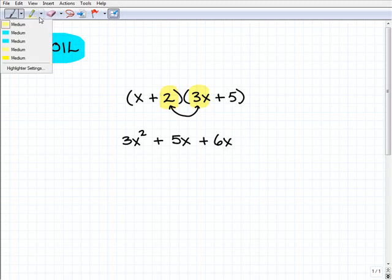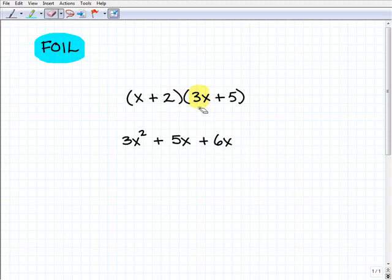And now that leaves us with the last. Let me get rid of this here. And the last is the last of each term of these binomials. That's going to be 2 and 5, which is 2 times 5, or 10.